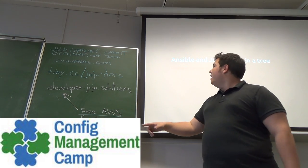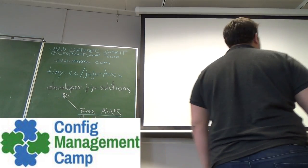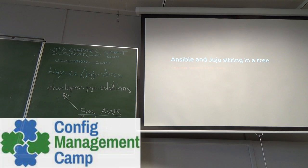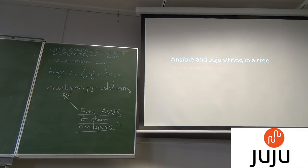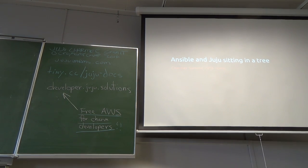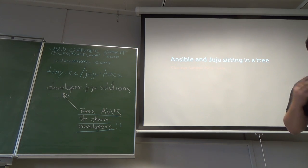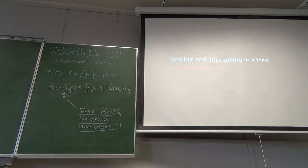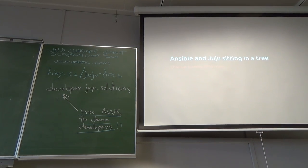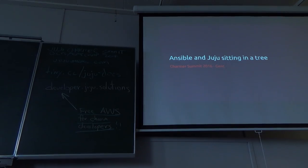For the first talk, we've got Charles Butler, who will be talking about Ansible with Juju sitting in a tree. Then we have two more talks after that: one from Matthew Brujek about how to model Kubernetes with Juju, and one about how to manage, deploy, and scale a production-grade big data stack, and how Juju makes that really easy. That's the lineup for the rest of today, and on Wednesday we have a whole set of other tracks as well.